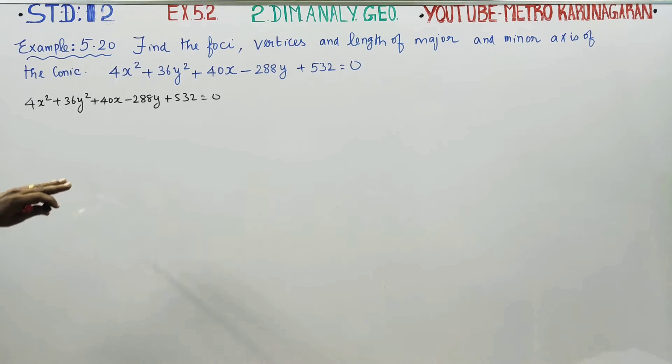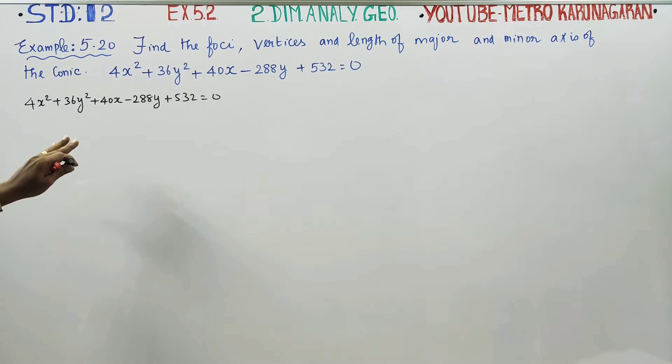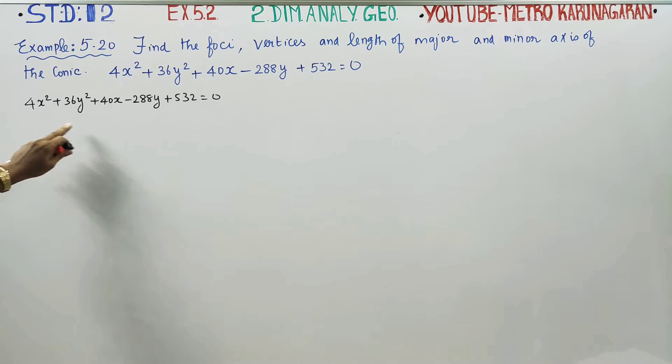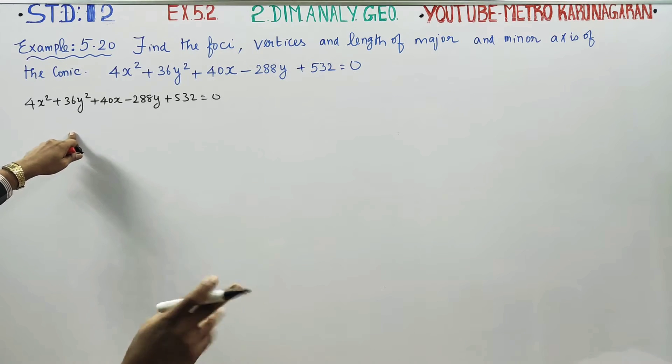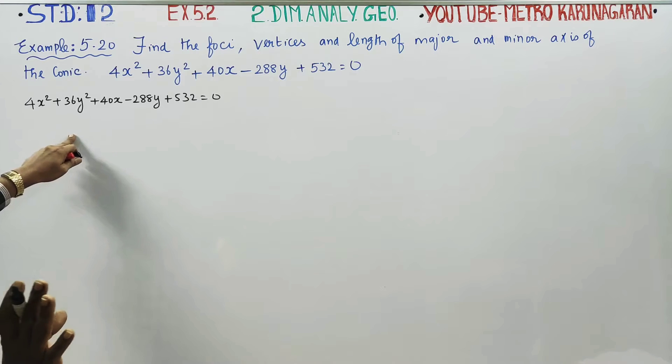This equation — is it a hyperbola or an ellipse? When both x² and y² are present, it may be an ellipse or a hyperbola. We need to determine the standard form to find out.